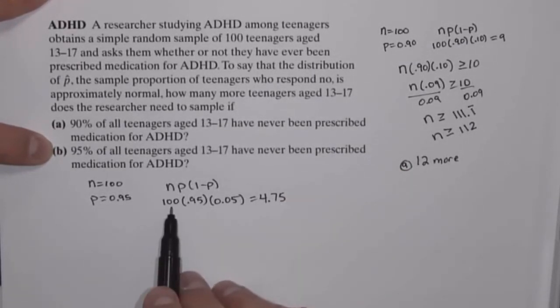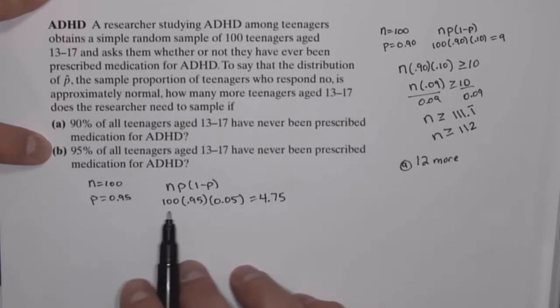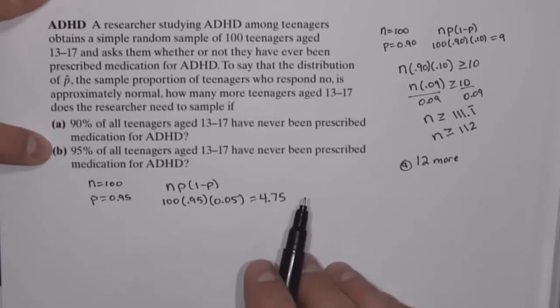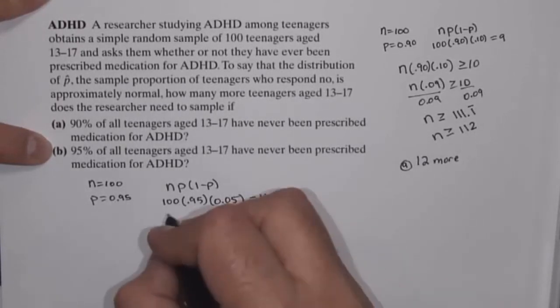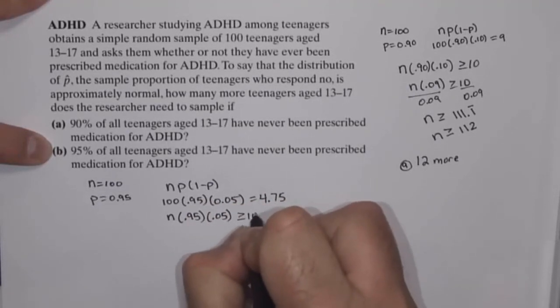So how many more above the 100 would need to be included in our sample so that we could say we have a normal distribution for the p-hat distribution? Same basic deal. If I take n times 0.95 times (1 minus 0.95), that needs to be 10 or bigger.